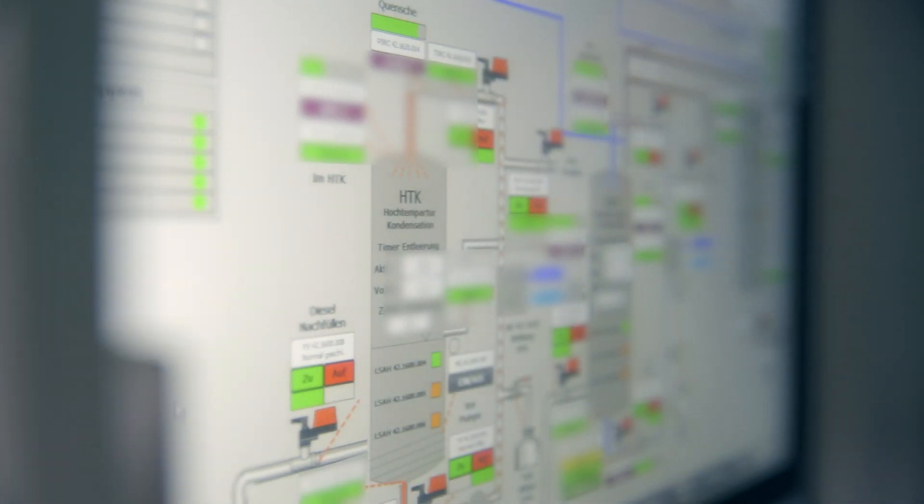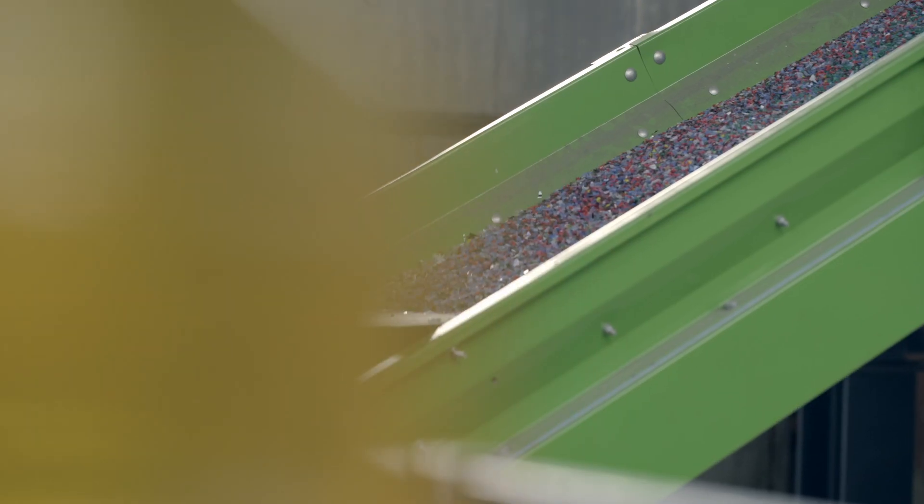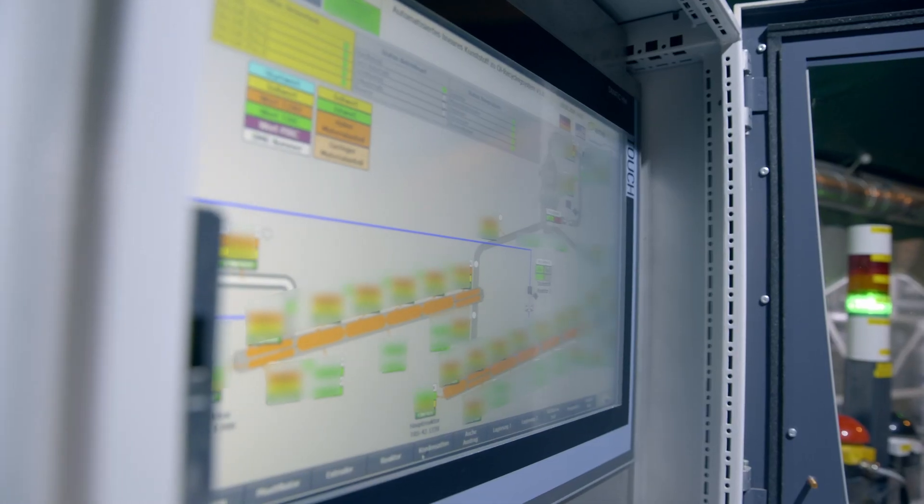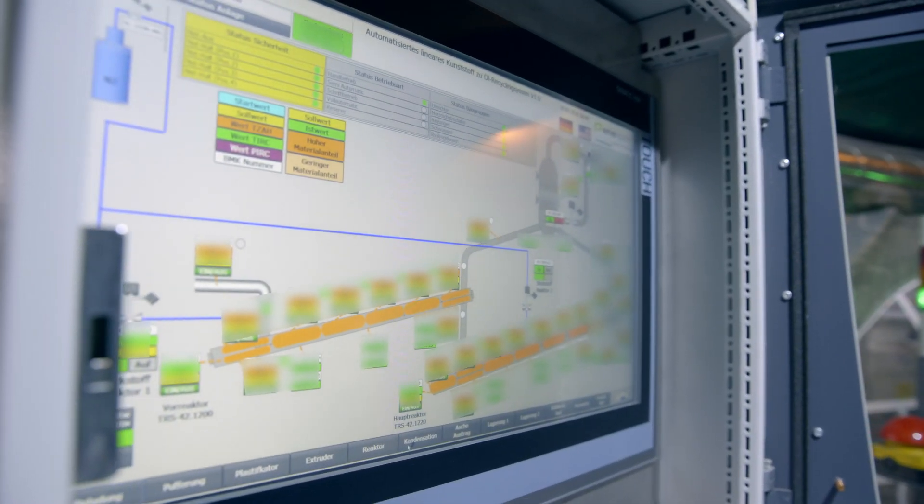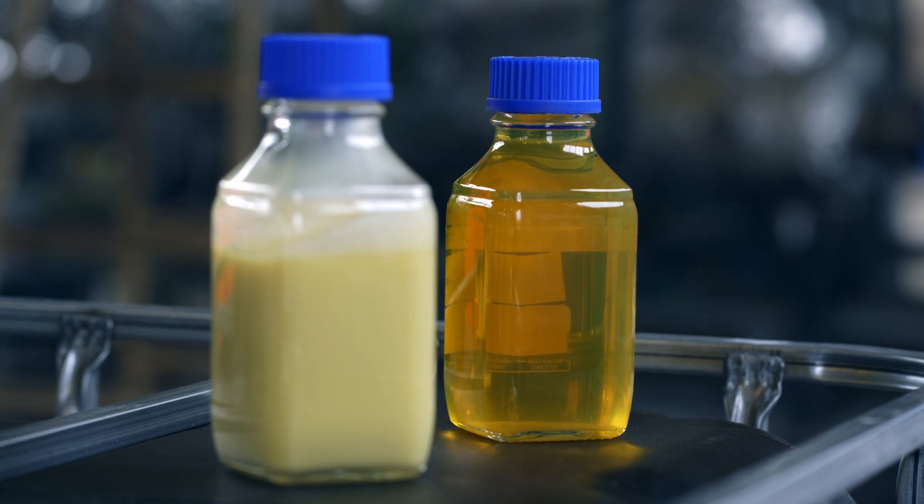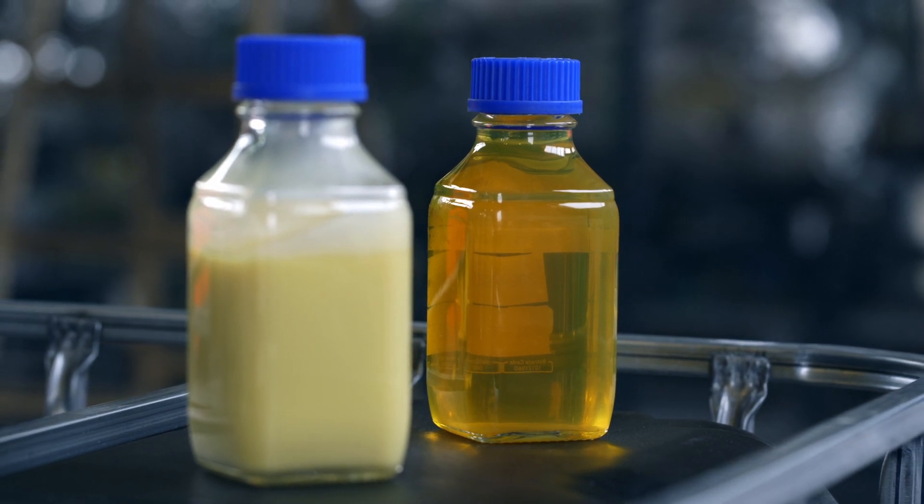All relevant process parameters are recorded and stored. If a plant operator wants to run the plant at a certain capacity for a previously defined raw material composition, all necessary temperatures, conveying speeds, reactor settings and pump capacities can be found in the process control system memory. Once the recipe has been selected, the process in the system runs properly automatically.